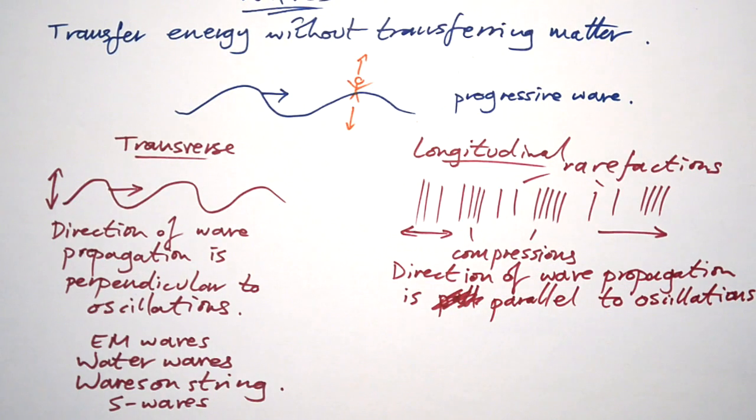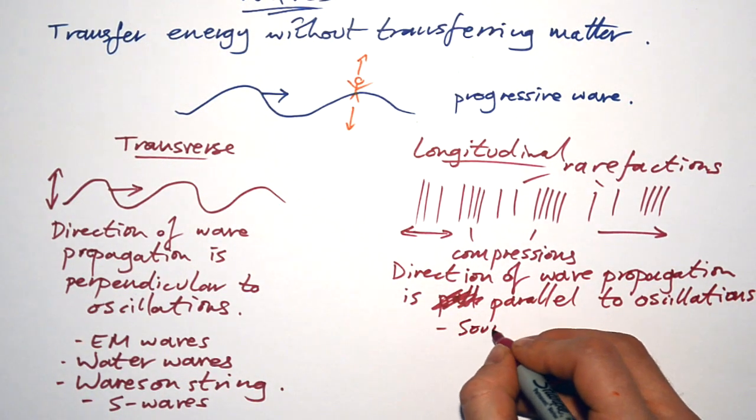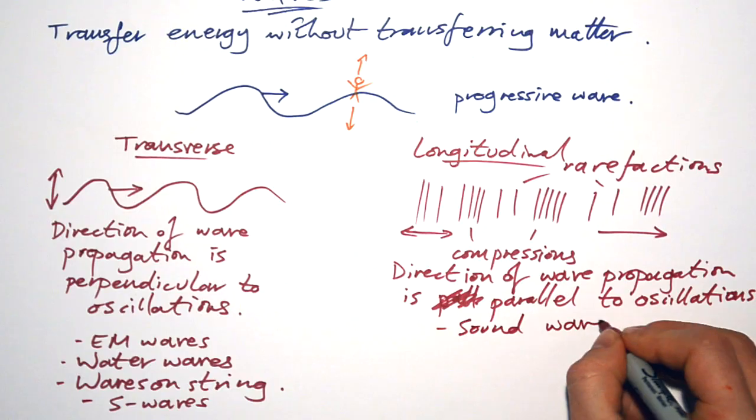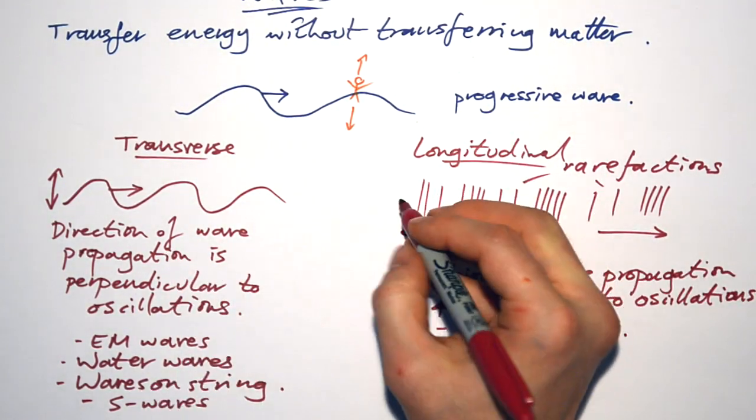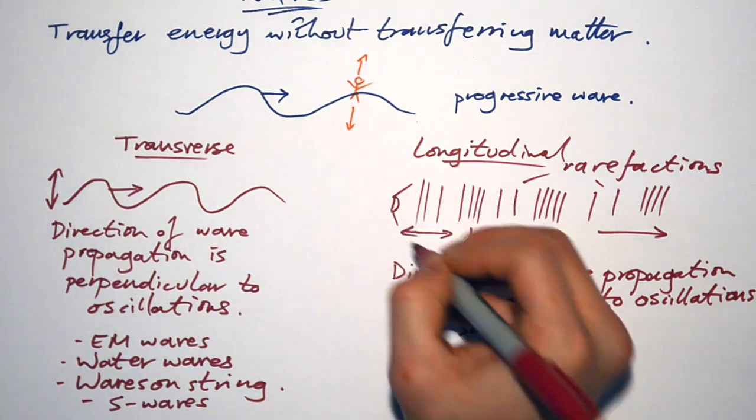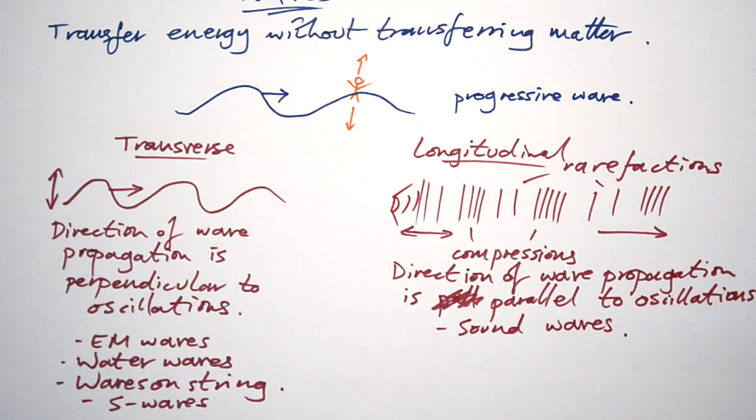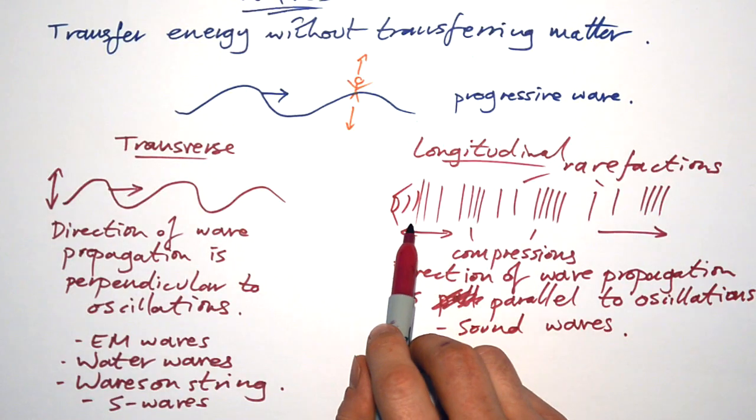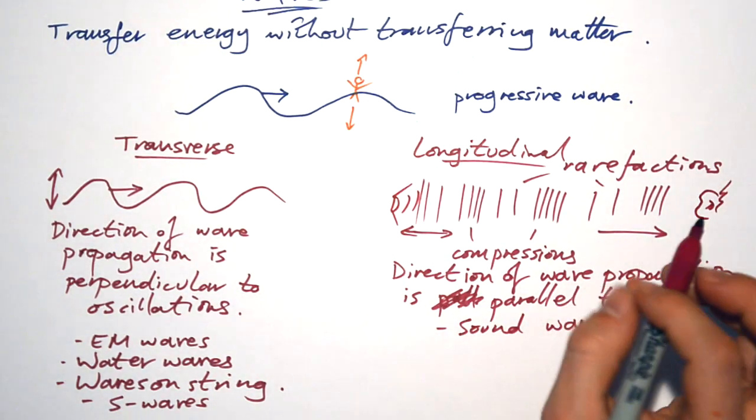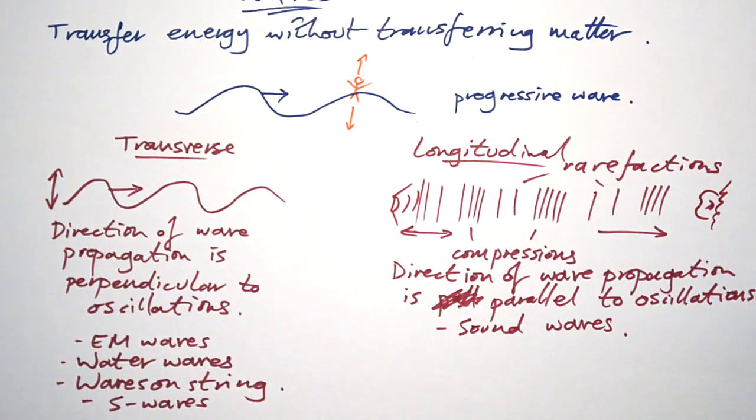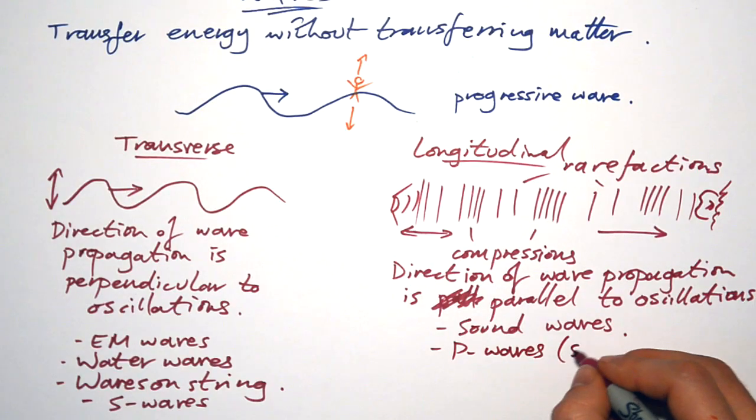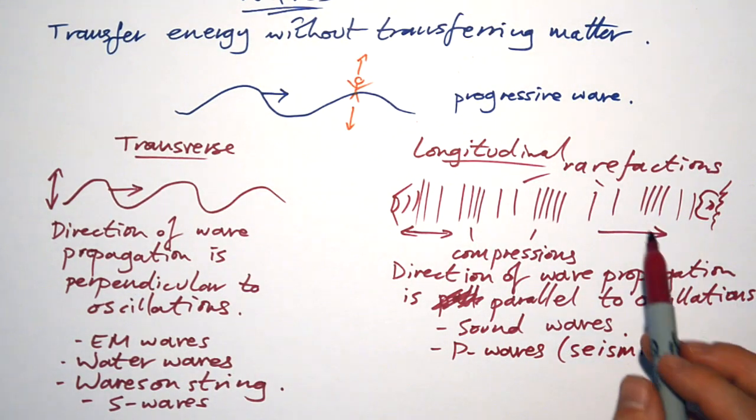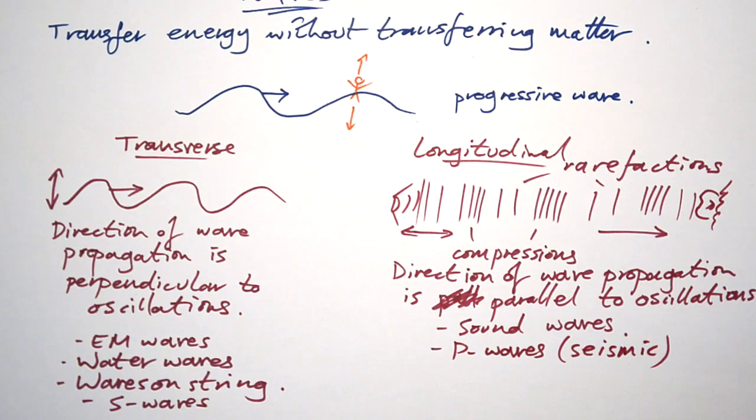Oscillations, just posh word for vibrations. Sound waves, when a speaker produces sound, it actually pushes the particles in the air. The particles at the speaker aren't going to your ear, but the compressions and rarefactions are. P waves, P seismic waves. So we have these types of waves and these types of waves in the earth. These ones are faster than S waves.